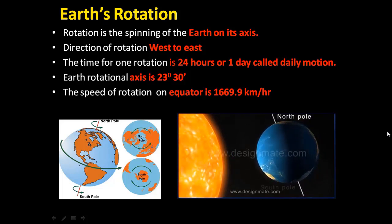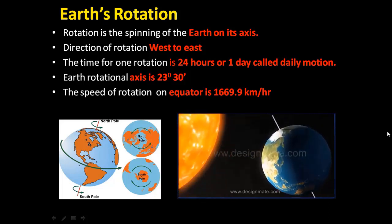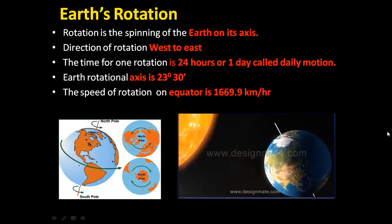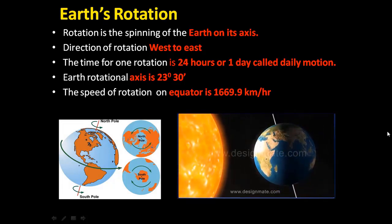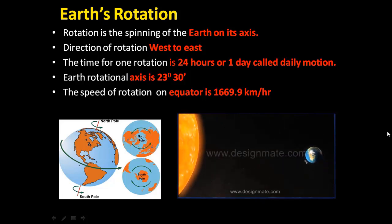The axis is tilted at 23 degrees 30 minutes, connecting the North Pole and South Pole. Earth takes 24 hours to complete one rotation. The part facing toward the Sun will experience day, and the part not facing toward the Sun will experience night. In this manner, Earth's rotation gives us day and night.